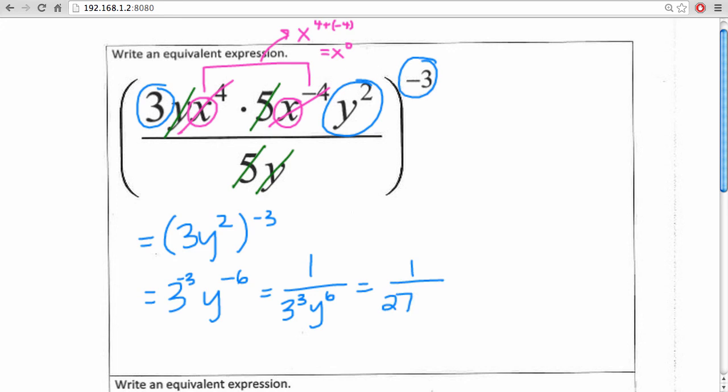So our final answer is going to be 1 over 27y to the sixth. And that's it.